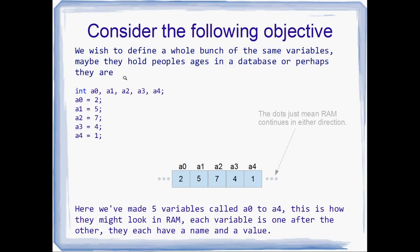So consider the following objective — this is what we want to do. We want to declare five variables, all of them called A, because maybe they're holding people's ages in a database, or they could be holding anything. So A0 is set to 2, A1 to 5, A2 to 7, A3 to 4, and A4 to 1, and this is what that looks like in RAM. There's dot dot dot either side of these boxes to indicate that RAM goes left and right for however many gigabytes of RAM you've got.